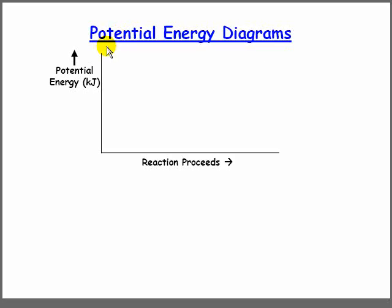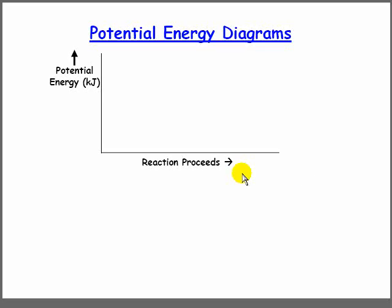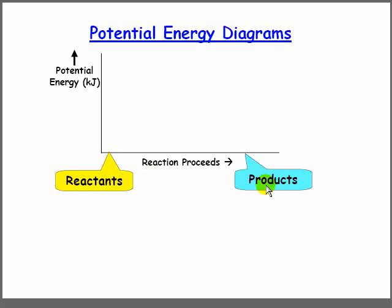We can now look at a very important graph we're going to be spending some time on. It's called the potential energy diagram. On the y-axis, we have potential energy, low and going up. And on the x-axis, we have reaction proceeds, which is sort of like a time axis for the reaction. On the left, we have the reactants, and on the right, we have the products.